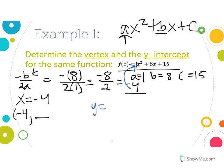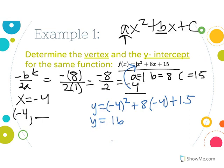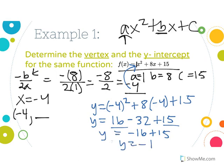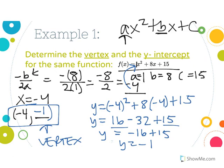Now plug x = -4 back into the original equation to find the y-value. We get y equals (-4)² + 8(-4) + 15. Negative 4 squared is positive 16, and 8 times negative 4 is negative 32, plus 15. So 16 minus 32 is negative 16, plus 15 gives us negative 1. So our vertex is the point (-4, -1).